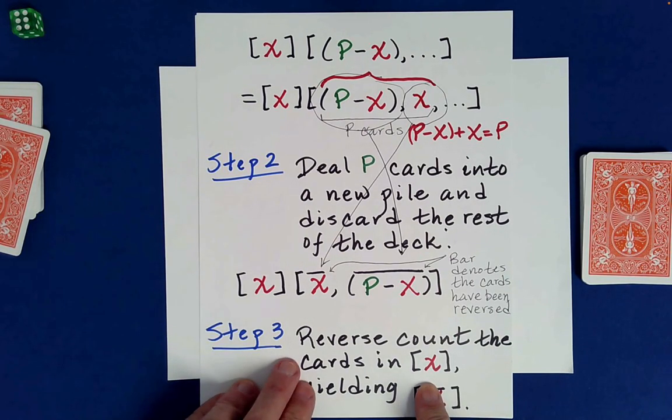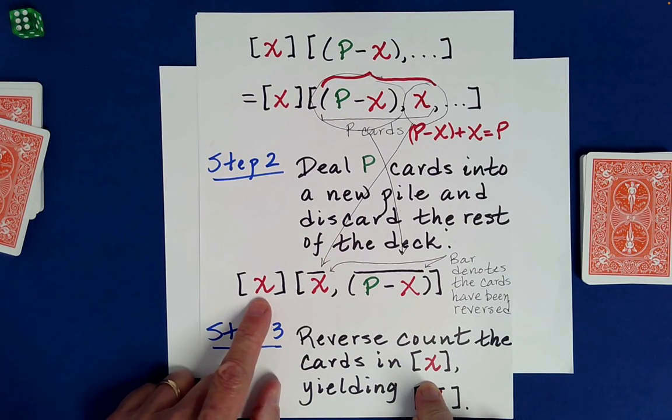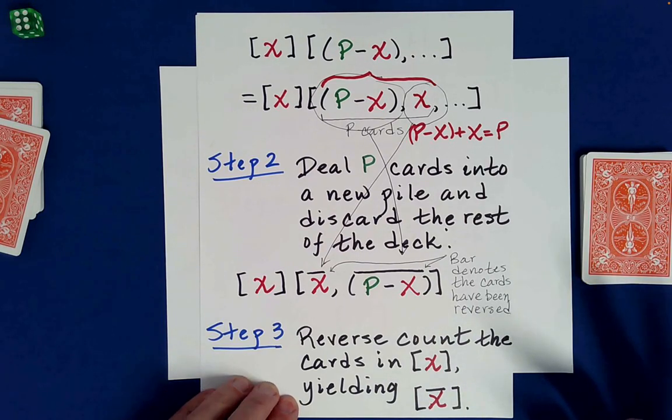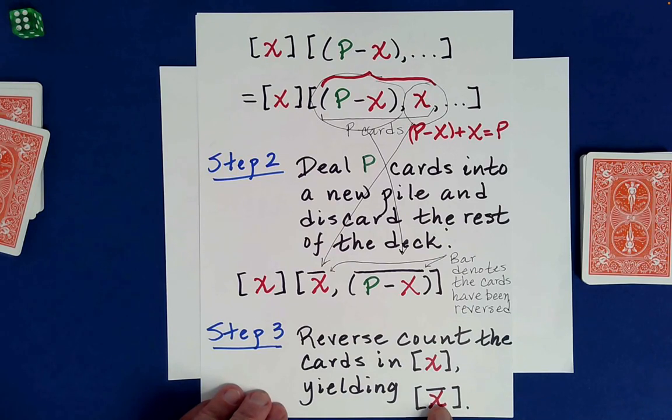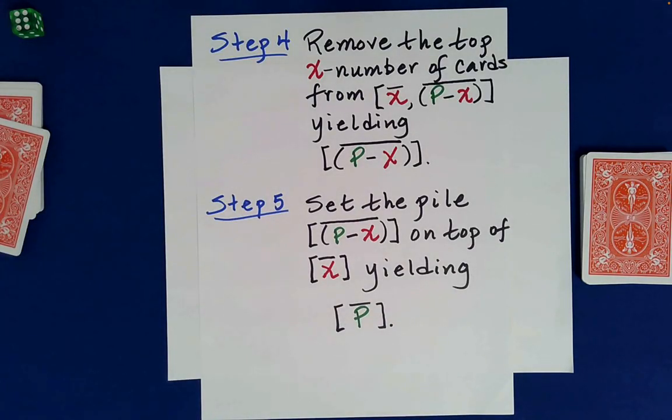So they switch places and that simply happens because we are reverse counting, right? So this right here ends up kind of on top and then what was on top ends up on the bottom. Okay. And then I've noted that all of the cards involved have been reversed within these individual groups of cards. Okay. And then what I did, if you remember, I picked up your little pile of cut cards and I said, Hmm, I wonder how many cards are here.